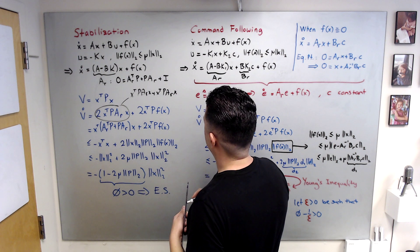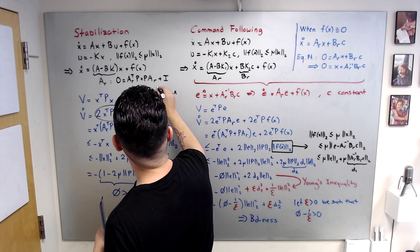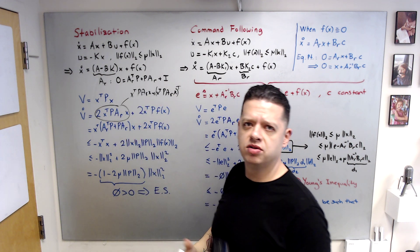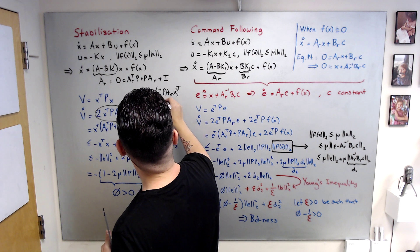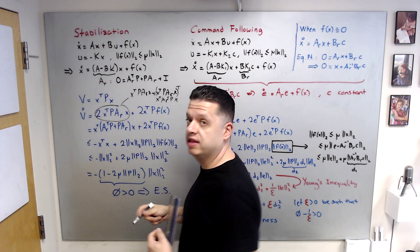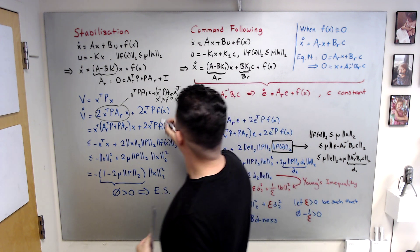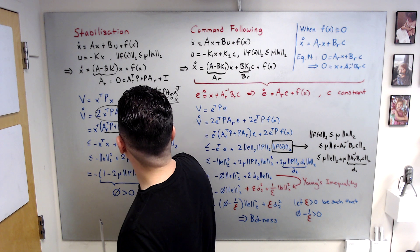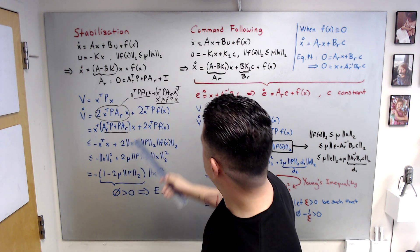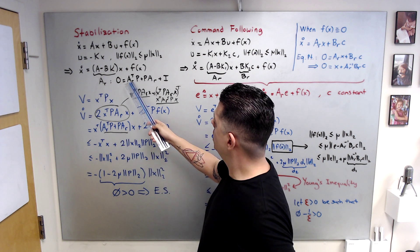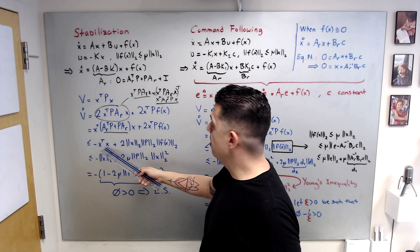Since P is positive definite it is symmetric, so P^T = P. Using both terms and the Lyapunov equation, this expression equals minus the identity term, and we arrive at the simplified V-dot expression. Then we take upper bounds using the 2-norm of x, P, and f(x).